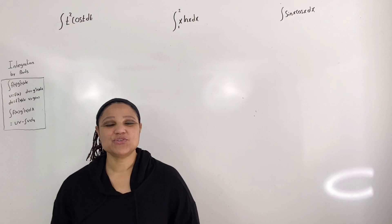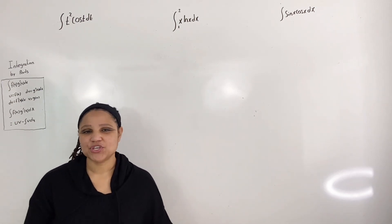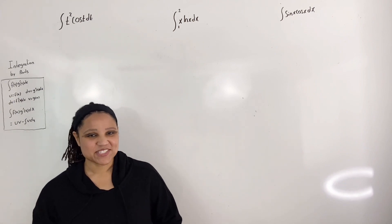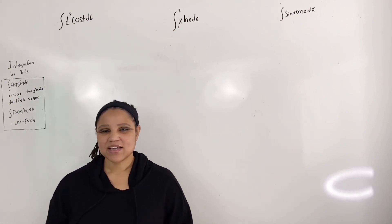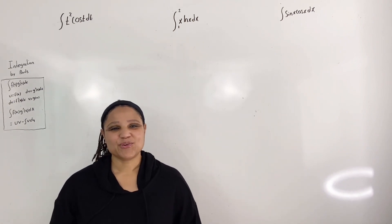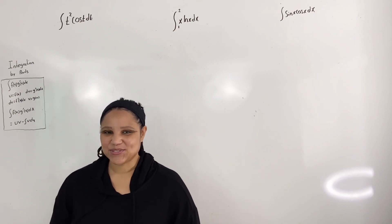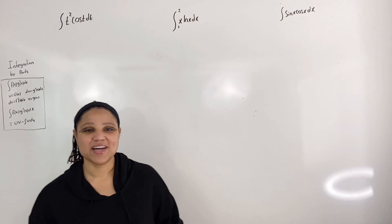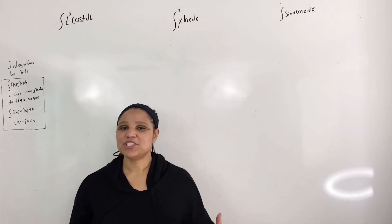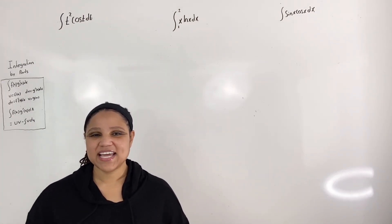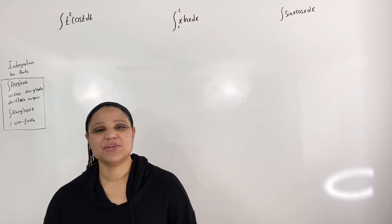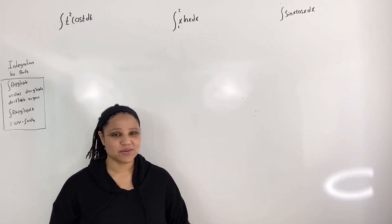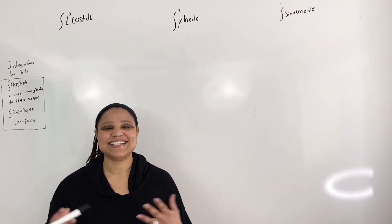The idea is to choose the right value for u and dv, such that when integration by parts is applied, we obtain an integral that is easier to evaluate. I have three examples where each one is different, so be sure to watch until the very end, because I will show you how to choose the best value for u and dv in any case.